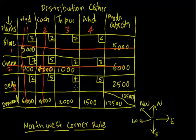I'm left with two cells. x33 happens to be the northwest corner-most cell. Target this cell — Jaipur requires 1000 more units. Delhi can supply the entire 1000 units. After meeting the Jaipur requirement, cancel this out.